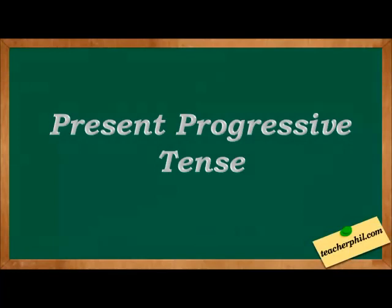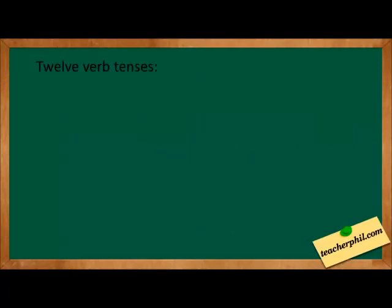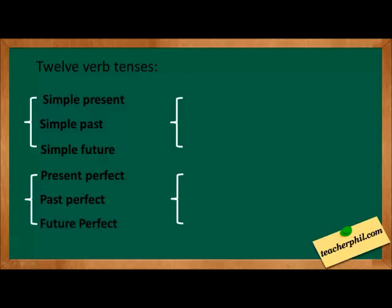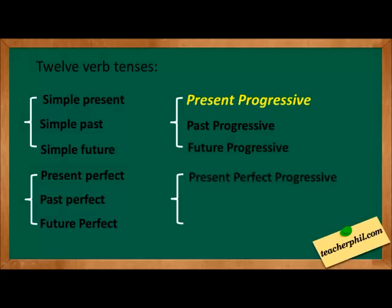Present Progressive Tense. The 12 verb tenses in the English language are: the simple present, simple past, simple future, present perfect, past perfect, future perfect, present progressive, past progressive, future progressive, present perfect progressive, past perfect progressive, and future perfect progressive. This lesson will talk about present progressive.